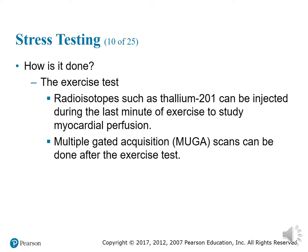A radioisotope such as Thallium-201 can be injected during the last minute of exercise to study myocardial perfusion — this was also discussed in chapters 13 or 14. Multi-gated acquisition (MUGA) scans can also be done after the exercise test.